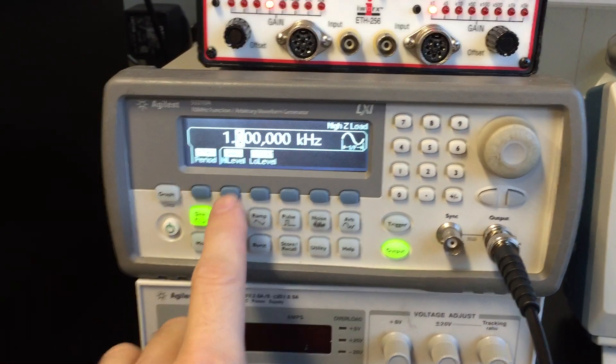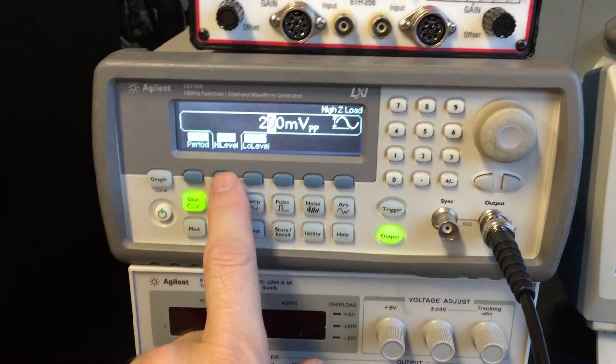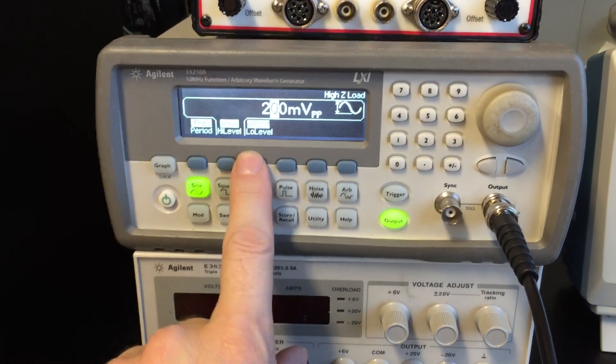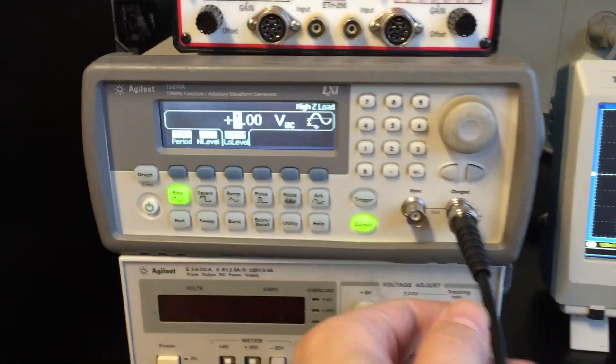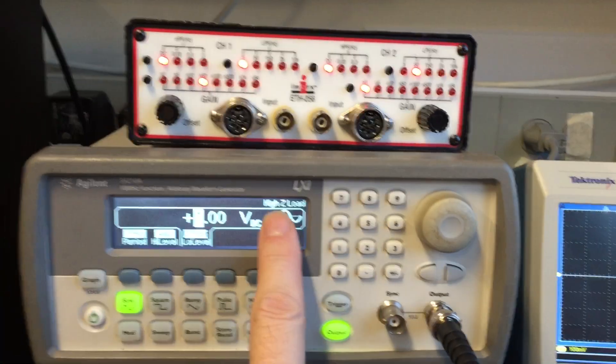Say someone asked us to find a 1 kHz signal that has a 200 mV peak-to-peak amplitude and a 1V offset. So we make our connection from our output to our input, high Z load, output's turned on.